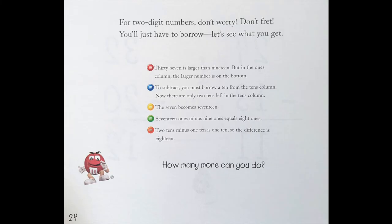The 7 becomes 17. Seventeen 1's minus 9 equals eight 1's. Two 10's minus one 10 is 10, so the difference is 18.